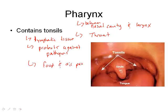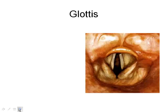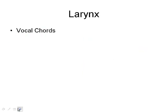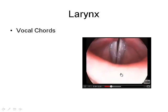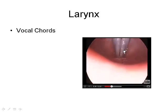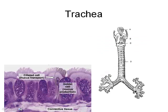The pharynx is also an area where both food and air pass through. The glottis is just the opening to the larynx. The larynx is where you have your vocal cords. You can see the vocal cords vibrating — this is what creates sound with air passing through.